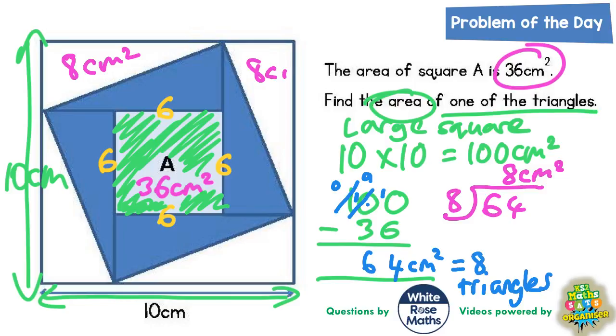All the white ones are worth 8 centimeters squared, and all the blue ones inside as well are worth 8 centimeters squared. And that's the final answer to the problem. The area of one of the triangles is 8 centimeters squared.